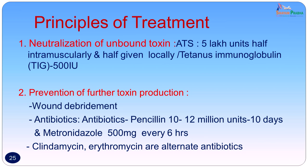The basic principles of treatment are: first, neutralization of unbound toxin — you cannot neutralize toxin already bound. ATS 5 lakh units (half intramuscularly and half locally) is given. This can be replaced by tetanus immunoglobulin made in humans. ATS is of equine origin and likely to cause anaphylaxis, so human-origin tetanus immunoglobulin is preferred. Smaller quantities are required — 500 international units only — and it does not cause anaphylaxis.